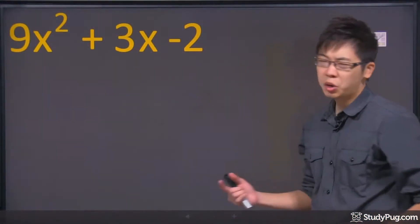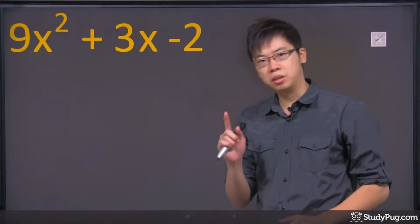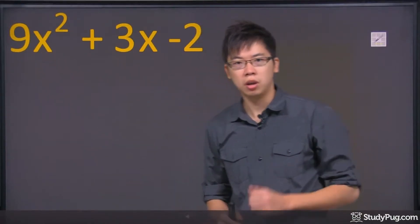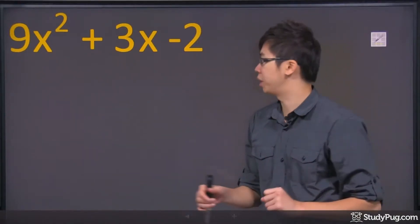Hi, welcome to this question right here. So here we are trying to do some factoring, but this time we've got a number in the front of x squared, so it's a little bit harder, but this is a trick.